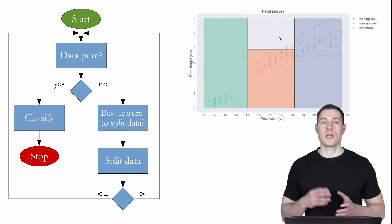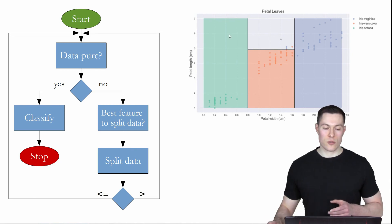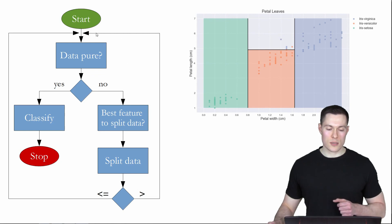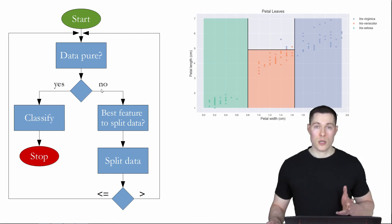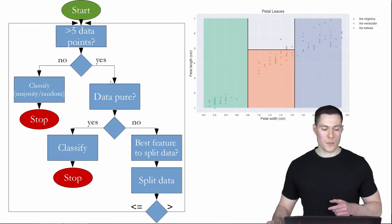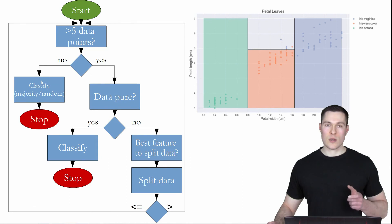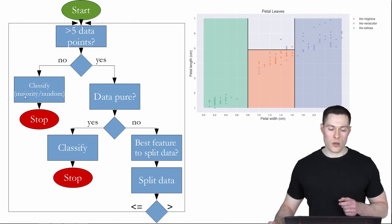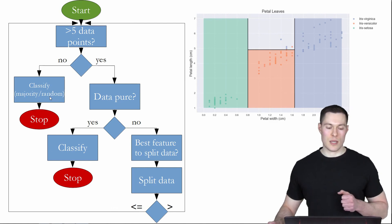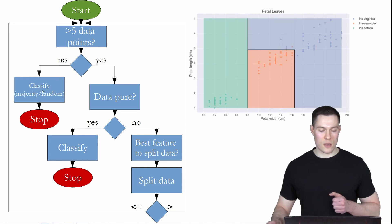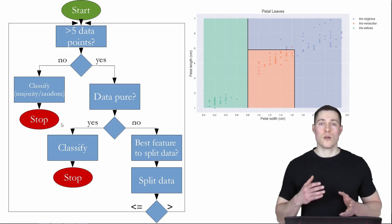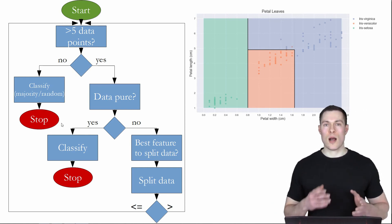We could easily implement the approach from our analysis into this algorithm by adding a step before checking purity: check if there are more than five data points. If there are, follow the algorithm as before. If there aren't, classify the data based on which class appears more often — or if classes appear equally often, randomly pick one. Since there are just four dots in the remaining area, we go this way, classify the data, and stop. Now all parts of the data have reached a stop, and the whole algorithm comes to a stop.